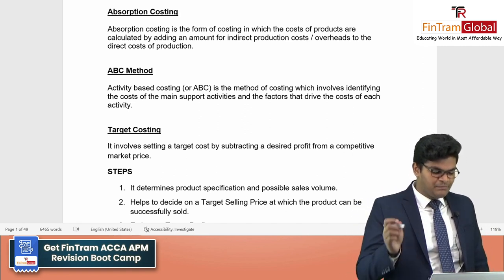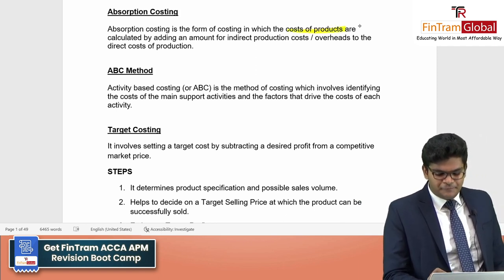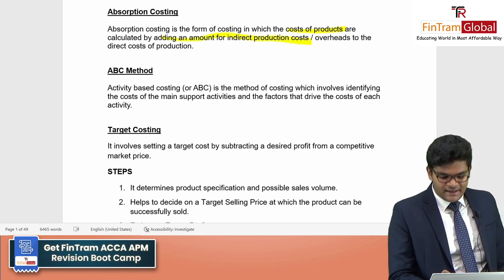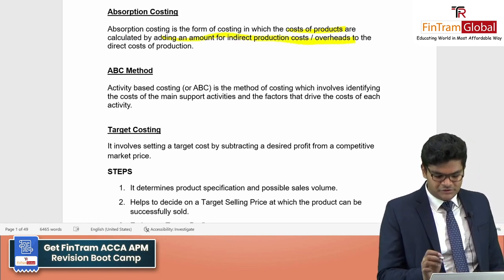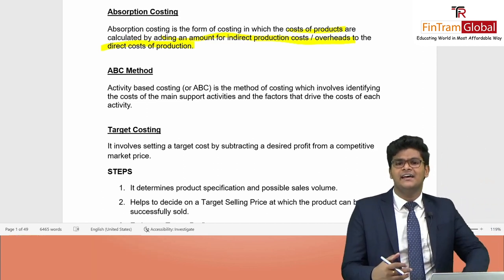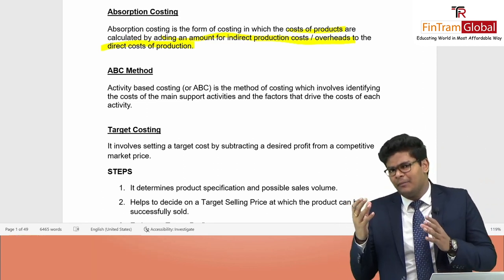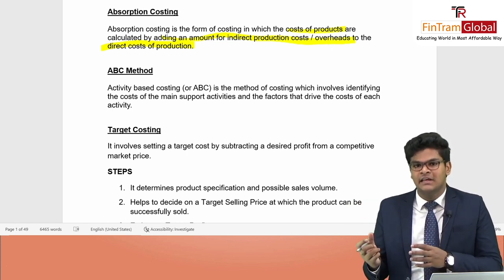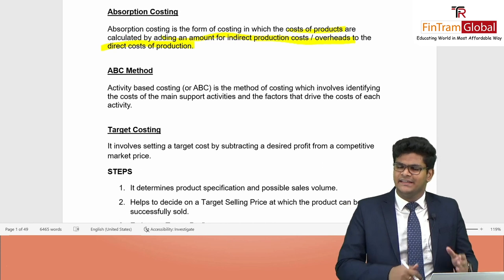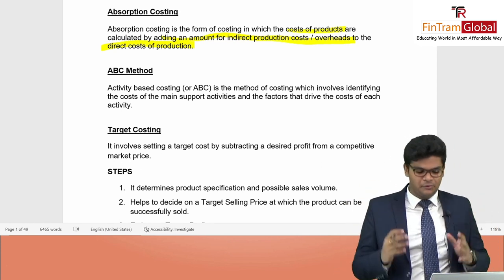Absorption costing is a form of costing in which the cost of products is calculated by adding an amount of indirect production cost overheads to the direct cost of production. We basically add a portion of the indirect cost to each of our products. We learned about all the calculation methods, and those are really important.